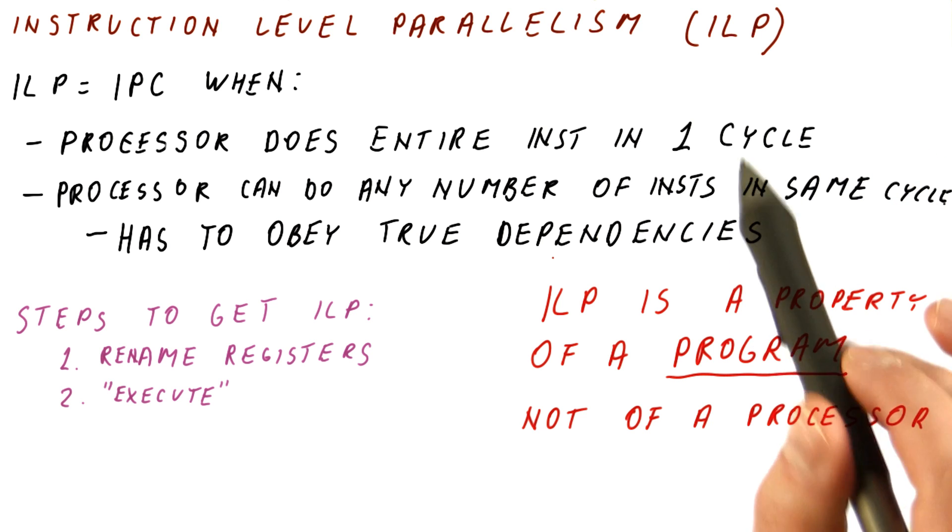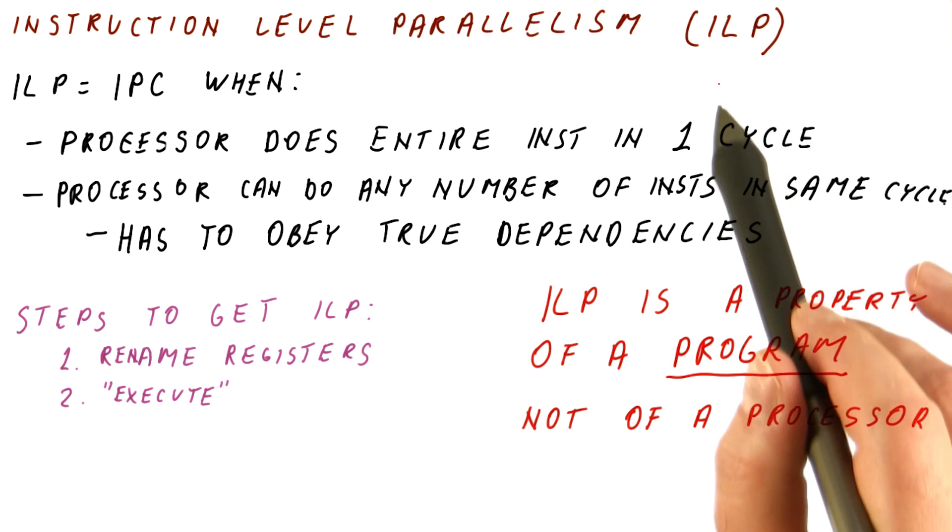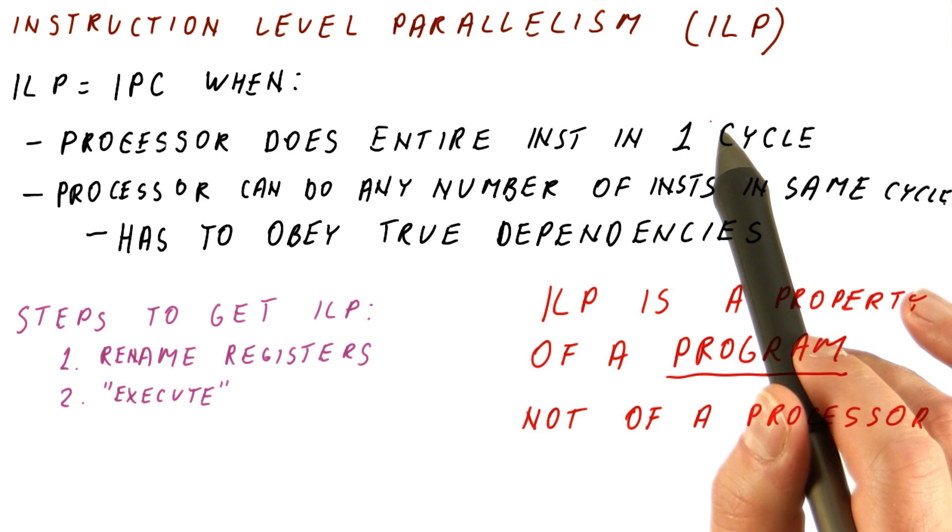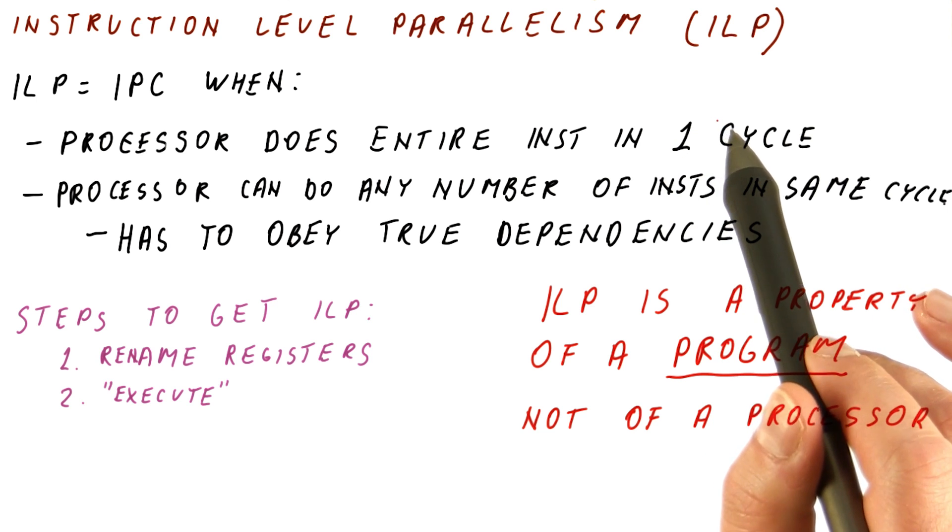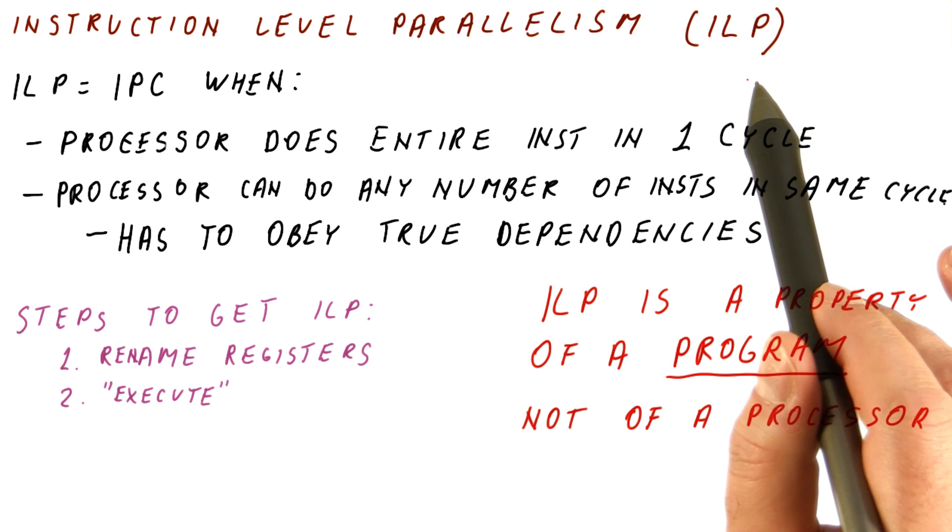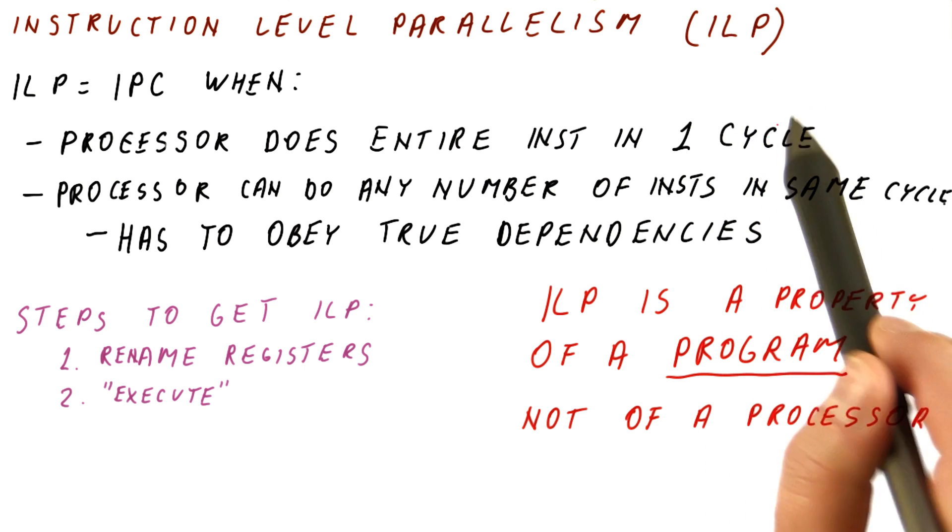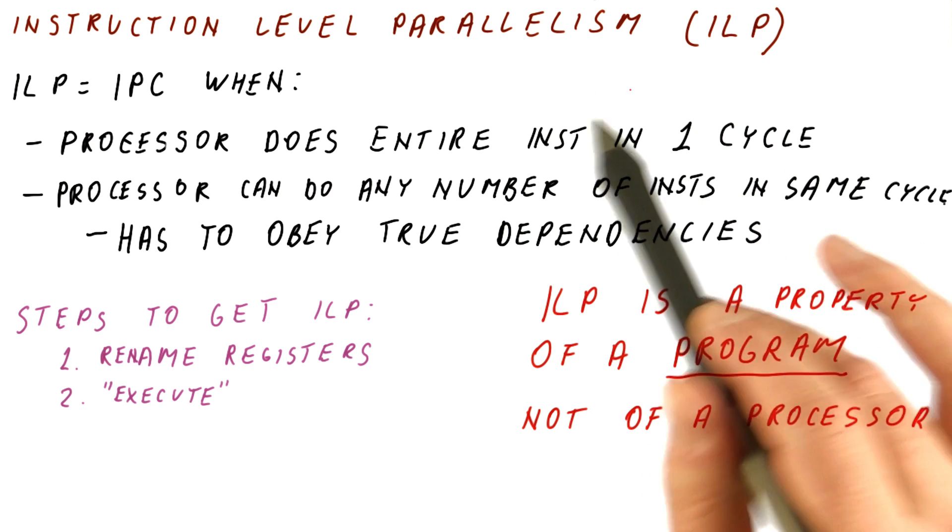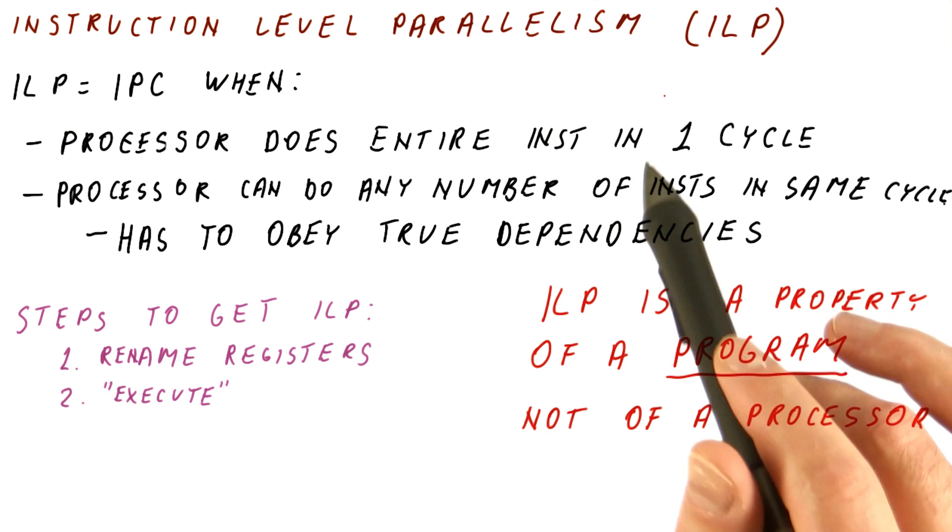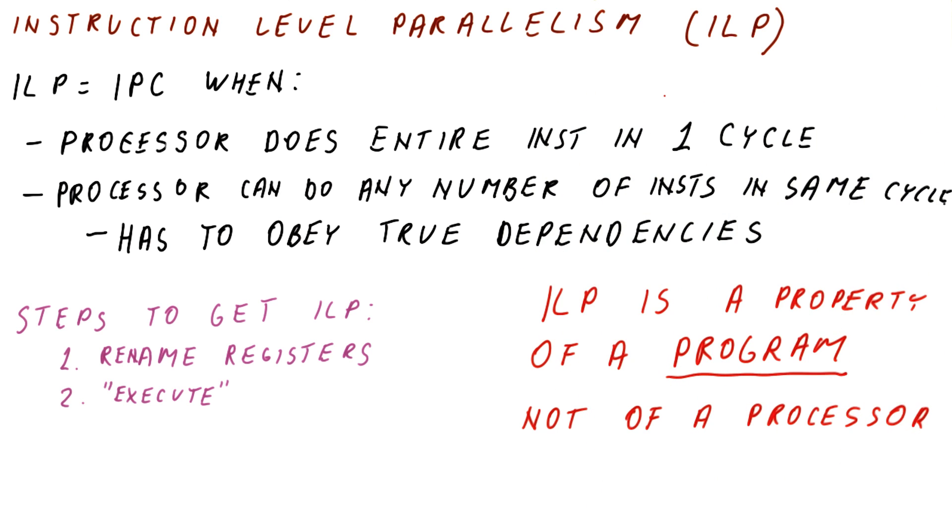So be mindful of that because, for example, it doesn't really make sense to say something like, what's the ILP on this program on the Intel Core i7 processor? Because the ILP on the Intel Core i7 processor is beside the point. The ILP is really the performance of this program on an ideal processor that has nothing to do with Intel i7.